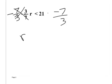Now, remember our rule: if we multiply by a negative number, we have to change our sign to keep this true. So now I take 21 times negative seven-thirds. I take three of that, it gives me seven. Seven times negative seven is negative 49.